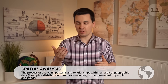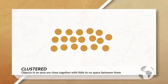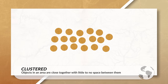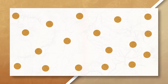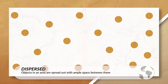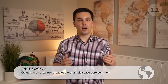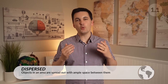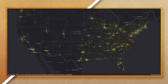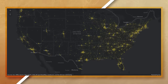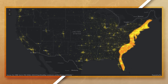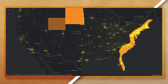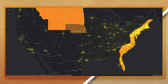When using spatial analysis, we will come across information that is clustered together or dispersed. For example, when looking at a dot density map of the United States, we can see that people are more clustered together on the East Coast and are more dispersed in areas such as the Dakotas or states like Wyoming, Montana, or Nebraska.